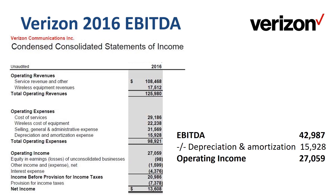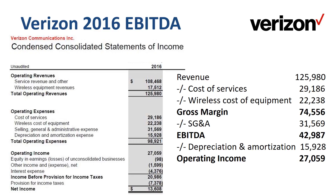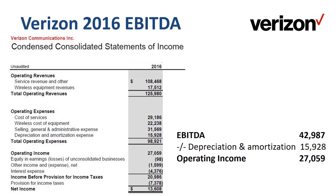So the EBITDA calculation in method one is from the top down — start with revenue and make your way down through gross margin to EBITDA. The EBITDA calculation in method two is slightly shorter: you start with operating income and work your way up.